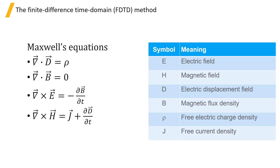Because it is a time domain method, FTTD can be used to calculate broadband results from a single simulation.